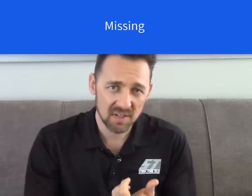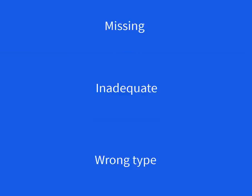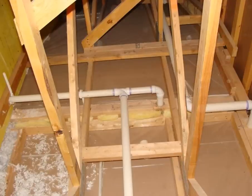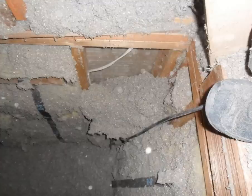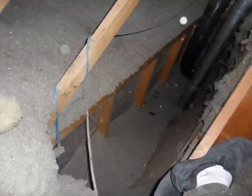Where does insulation fall into this? Insulation does matter, and there are three things that can go wrong: missing insulation, inadequate insulation, or the wrong type. For missing insulation, either somebody forgot to insulate a space — I've found that on new construction homes where an entire attic space was forgotten — or insulation has simply fallen down, like in this knee wall space where insulation was falling out of place and there was a cavity completely forgotten.